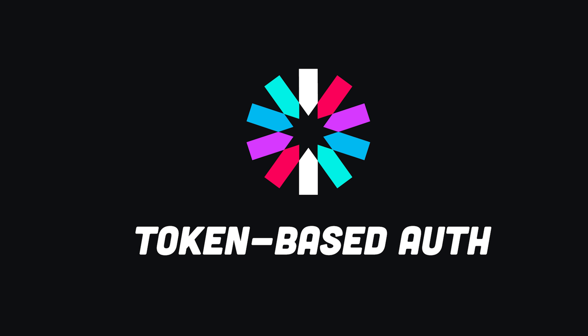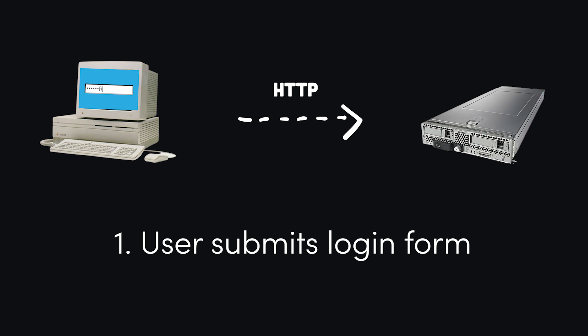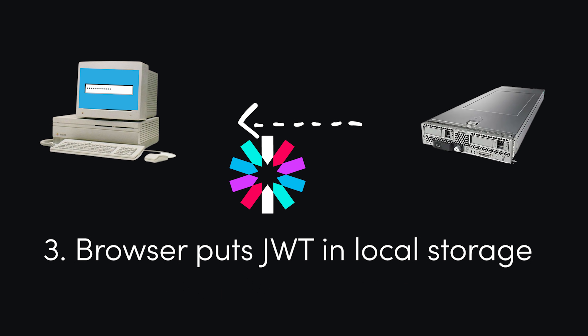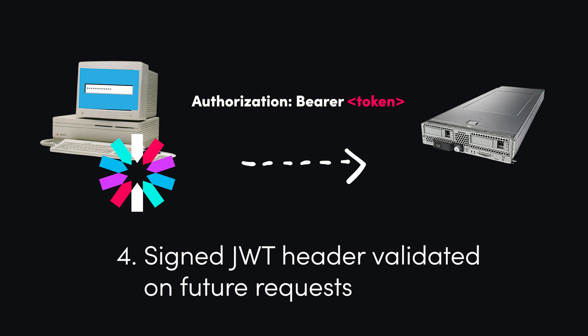And that brings us to token-based authentication, which solves this problem but introduces its own set of challenges. The process begins the same, with the client sending its login details to the server. Instead of storing a session ID, it generates a JSON web token. The JWT is created with a private key on the server, then it's sent back to the browser, where it's normally kept in local storage. On future requests, the JWT will be added to the authorization header, prefixed by bearer. The server then only needs to validate the signature — there's no need for a database lookup elsewhere in the infrastructure, and that's way more efficient when dealing with a distributed system in the cloud.